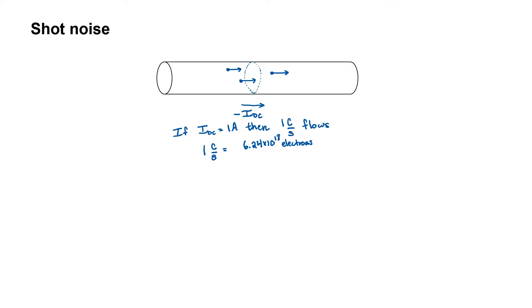Therefore, if we have 1 Ampere of current flowing, we're going to have 6.24 times 10 to the power 18 electrons per second passing through any cross section in our wire. That's a huge number of electrons.